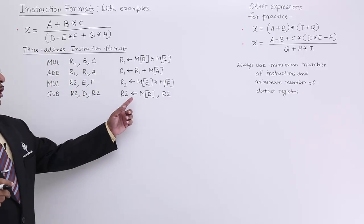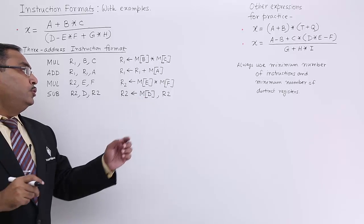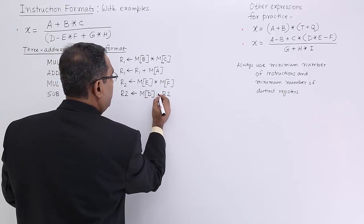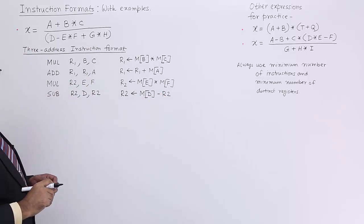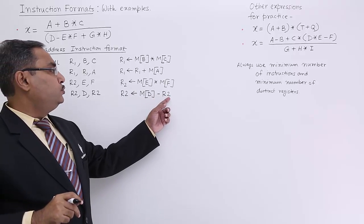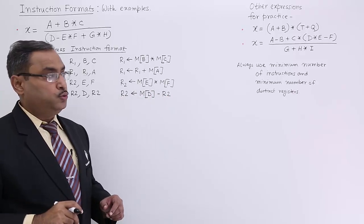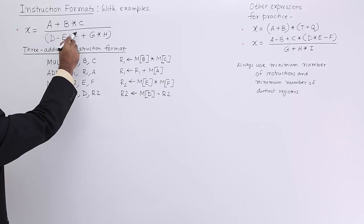Memory content for the variable D and R2. Sorry, I should put this one minus because it is a subtract. M D minus R2 will be kept in R2. This part has been kept in R2.